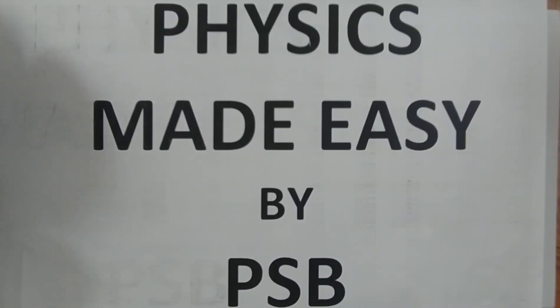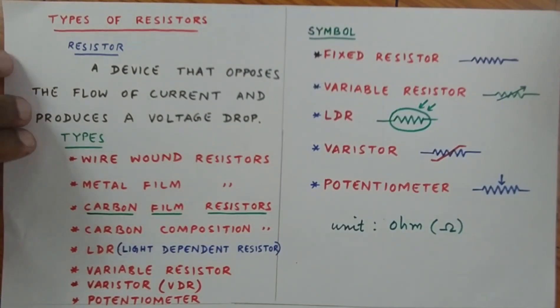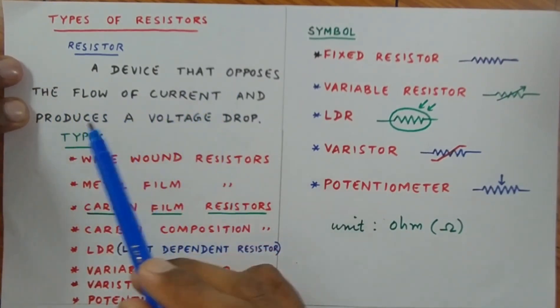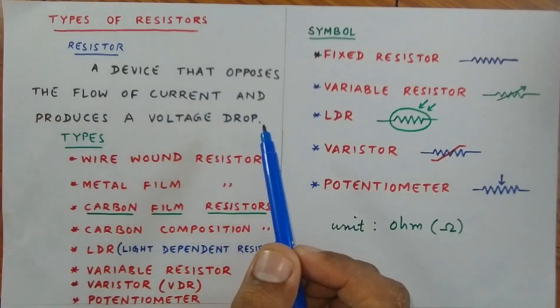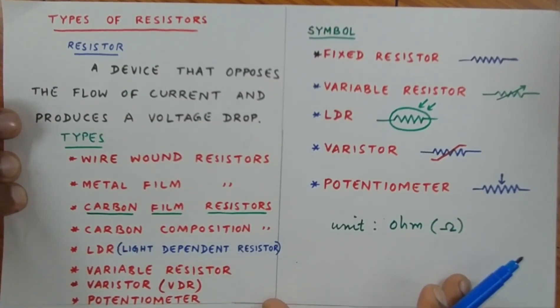Assalamu alaikum. In this video, you will learn about resistors. A resistor is a device that opposes the flow of current and produces a voltage drop. The phenomenon of opposing current by a resistor is referred to as resistance. Resistance is measured in ohms. Different types of resistors are available.